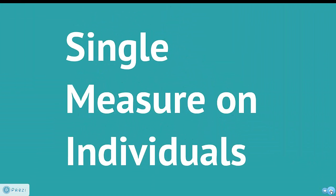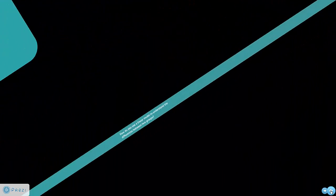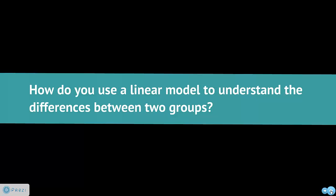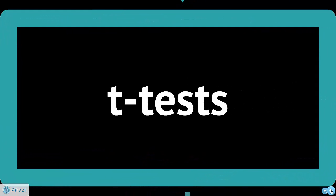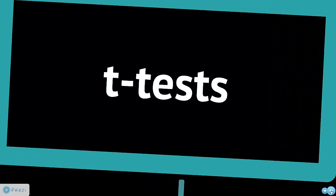Sometimes you're not looking at two continuous measures. Sometimes you're actually looking at groups. So how do you use a linear model to understand the difference between two groups? Well for that, we're going to cover what are called t-tests. Very simple, very straightforward, and I'll show you how that works.